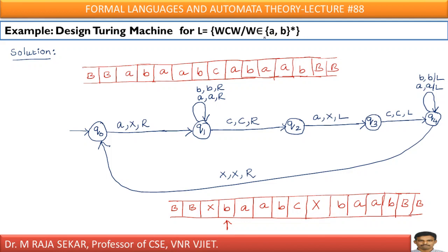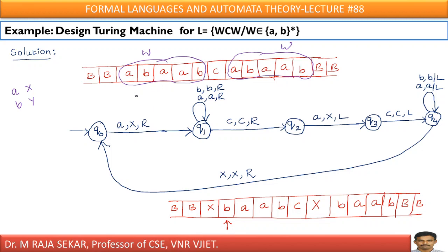W belongs to {A, B}* means, for simplicity, let me consider a string A, B, A, A, B — let me say this is W. And this one is also A, B, A, A, B — this is also W. So this is in the form of W C W. The logic is simple: I will replace this A by X and this B by Y. I am taking this sample string to construct a Turing Machine so that I will try to cover all the cases.